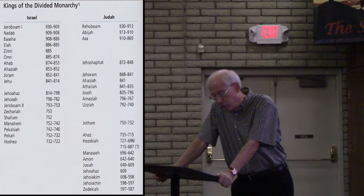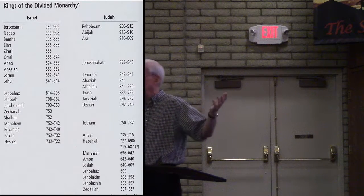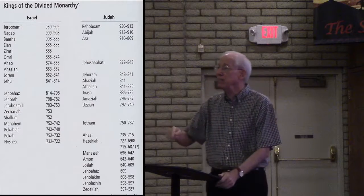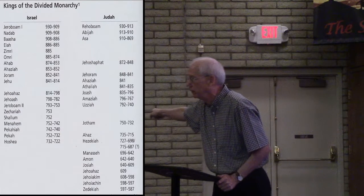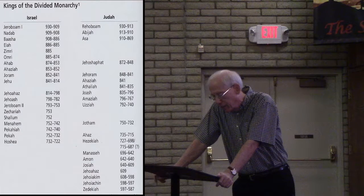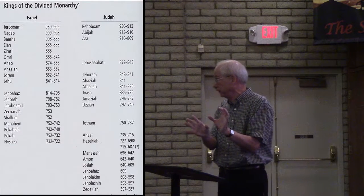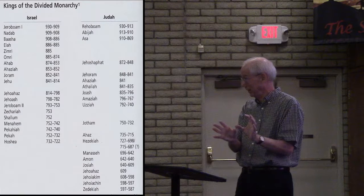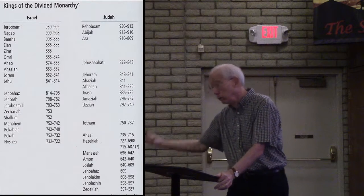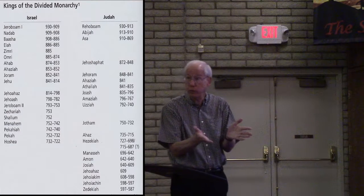Jehu then had the inhabitants of Samaria kill Ahab's seventy sons and send their heads to him in Jezreel. He killed other court officials in Ahab's administration because he was charged by God to eliminate Ahab's house. He even killed 42 of Ahaziah's relatives — the king of Judah's kin — when he encountered them on his way to Samaria to finish off Ahab's house.